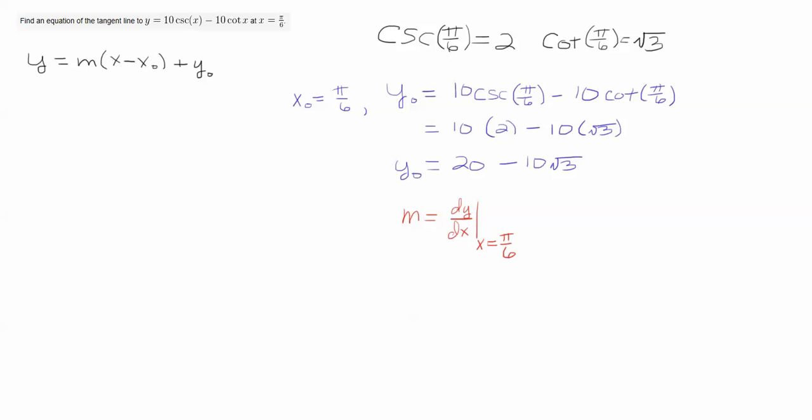So I'll rewrite the curve, and I will take its derivative. The derivative of cosecant is minus cosecant cotangent. So the minus sign, I'll stick in front of that 10. The derivative of cotangent is minus cosecant squared. So minus minus gives us a plus, and I'll write cosecant squared.